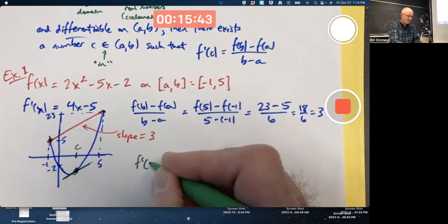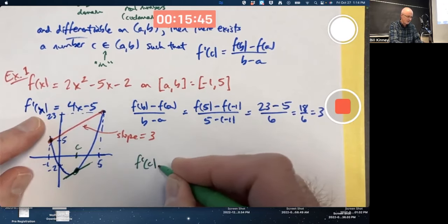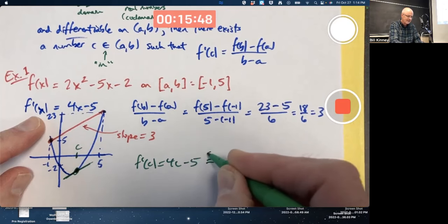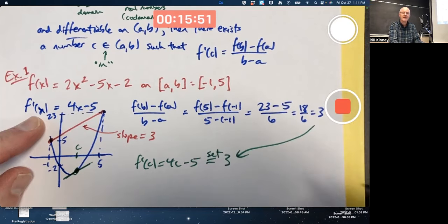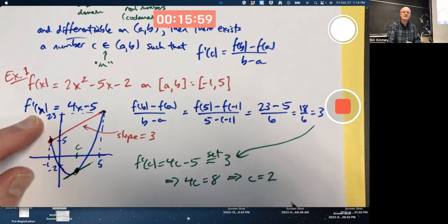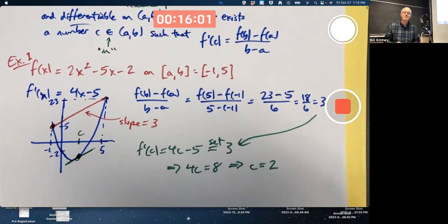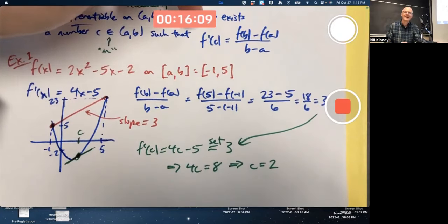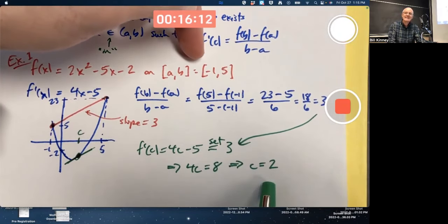The mean value theorem guarantees a number C between negative 2 and 5, where the slope of the tangent is also 3. Somewhere just to the right of the minimum there, the slope of the tangent might be also 3. F'(C) is 4C - 5. I want to set this equal to 3, the slope of the secant line, and solve for C. Add 5 to both sides, divide both sides by 2. It looks like C is 2. Do you notice 2 is the midpoint of the interval from negative 1 to 5? Halfway between them.